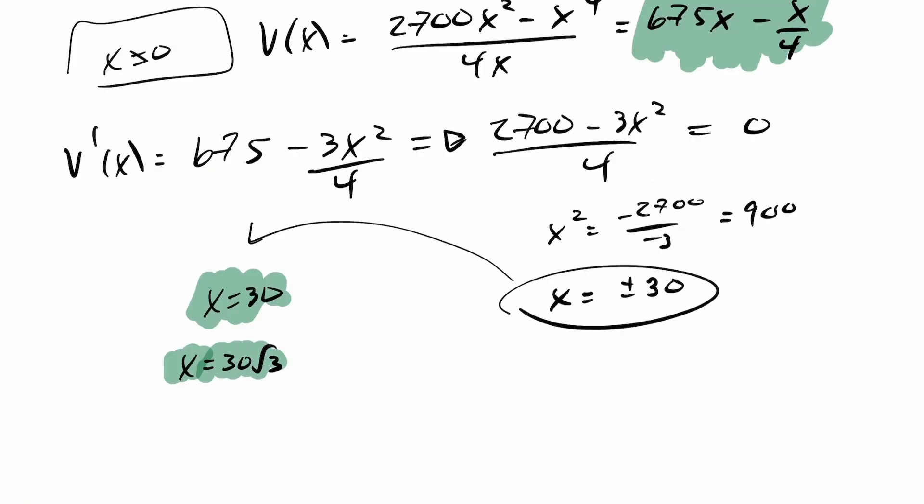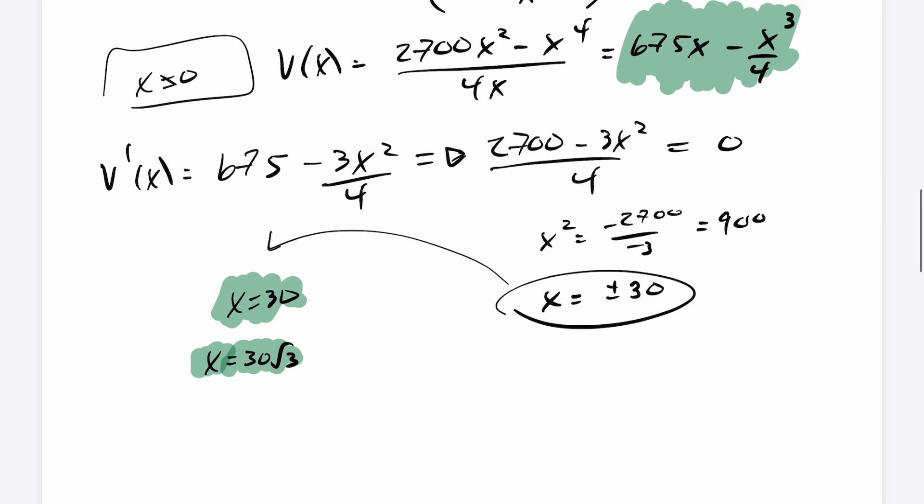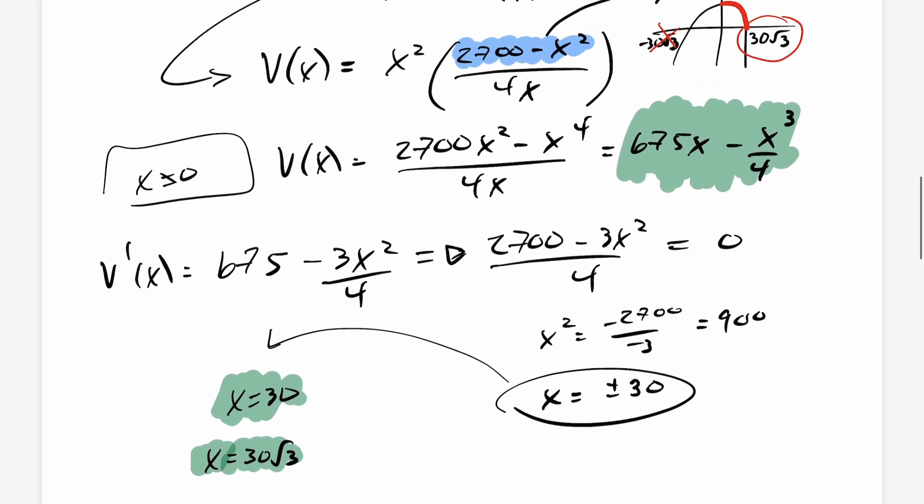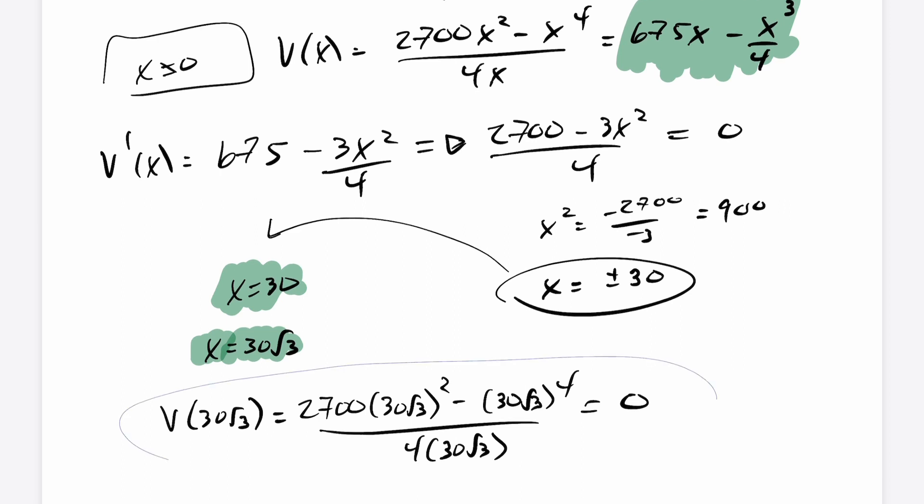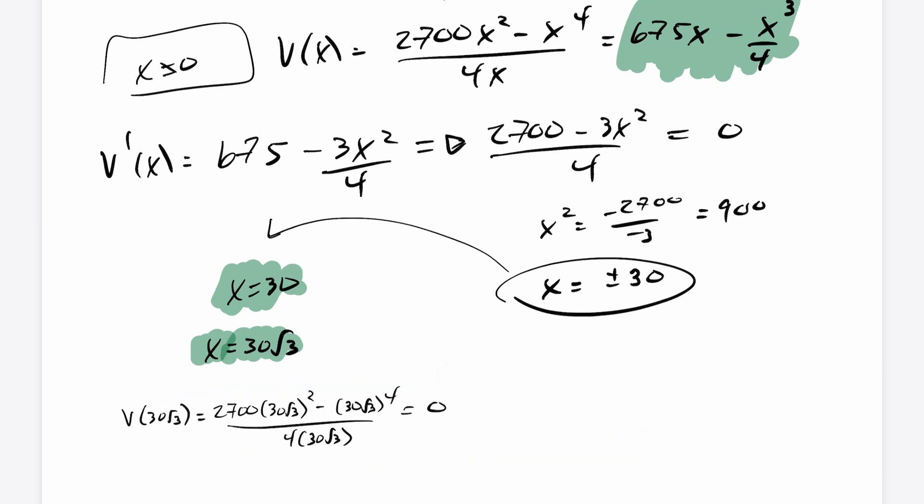So I've grabbed another endpoint here of 30 root 3. And I should check both of these to see which one will yield the largest volume. Obviously, at 30 root 3, we can already see it's going to yield a volume of 0. But just to go through the process here, you'll notice that V at 30 root 3, if I assess my volume here, subbed into my expression, you're going to get 2700 times 30 root 3 squared minus 30 root 3 to the fourth over 4 times 30 root 3. And you end up getting 0 here. So when I go ahead and find the volume here, that's obviously not going to be the largest volume.